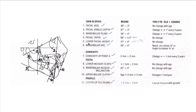Lower facial height is the ANS-Xi point-PM angle, about 47 degrees, with no change with age. The mandibular arc also changes, but since the mandibular arc and mandibular plane are similar, it may be sufficient to focus on the mandibular plane angle.